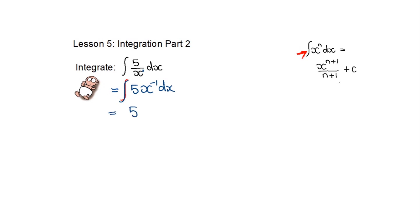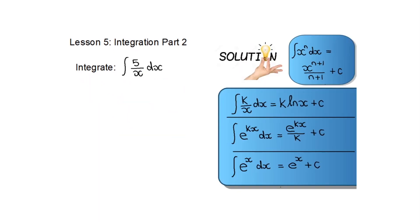Then I can write down the constant 5, write down what I have, add 1 to the exponent, and divide by this new exponent. But do you see what's going to happen? My new exponent is going to be zero, and I may not divide by zero. So I have a problem — something is definitely wrong.